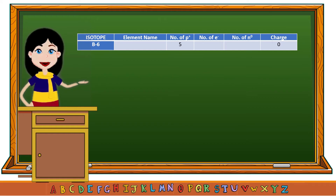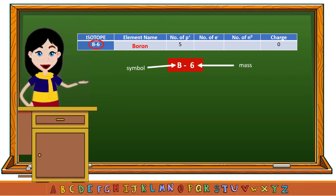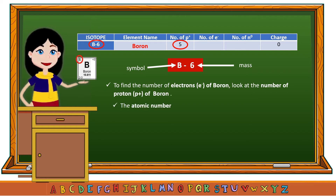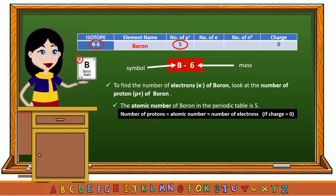Look at another example: B-6 is an isotope. B is the symbol for boron. If you look at the periodic table, the atomic mass of boron is 10.811, but that is not the atomic mass of the B-6 isotope — instead, 6 is its atomic mass. The atomic number of boron in the periodic table is 5. Since the number of protons of boron is 5 and its charge is 0, the number of electrons is also 5.